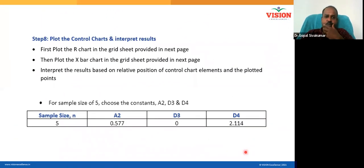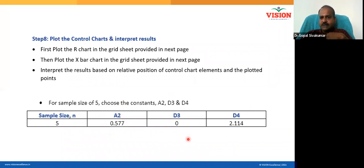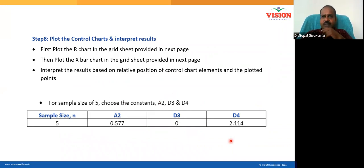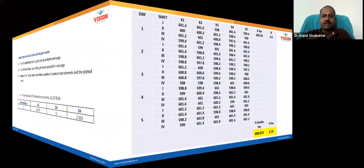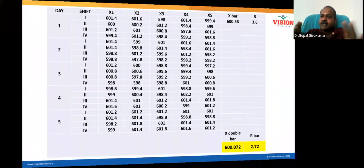These constants — D4, D3, A2 — are called statistical constants for control charts. They depend on the subgroup size. Even with a smaller subgroup size, these constants help you arrive at an optimal standard deviation. Don't calculate standard deviation directly — use the statistical constants. The formulas are: UCL(R) = D4 × R-bar, LCL(R) = D3 × R-bar, UCL(x-bar) = x-double-bar + A2 × R-bar, LCL(x-bar) = x-double-bar − A2 × R-bar.